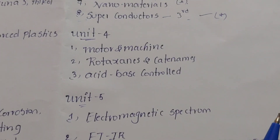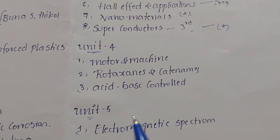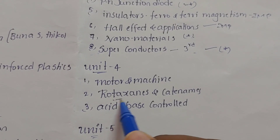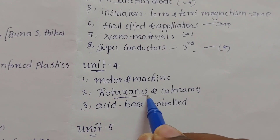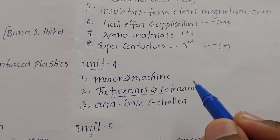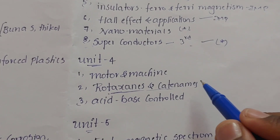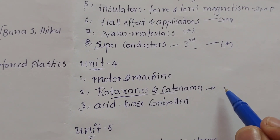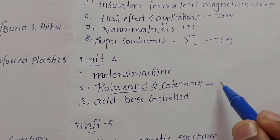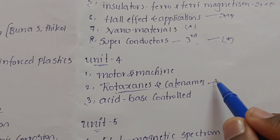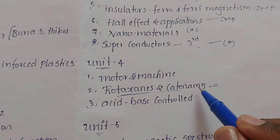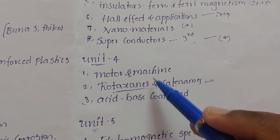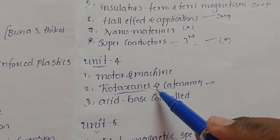Coming to Unit 4, for R18 JNTU, Rotational Spectroscopy and Caternase have been in maximum 3 sets as compulsory questions. In 4 sets it has Motor Animation. Rotational Spectroscopy and Caternase are very important topics.